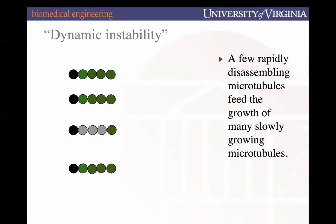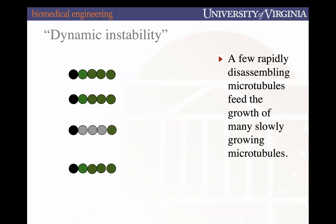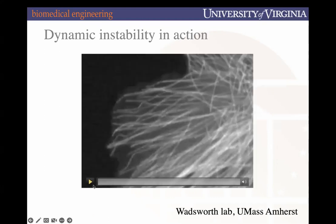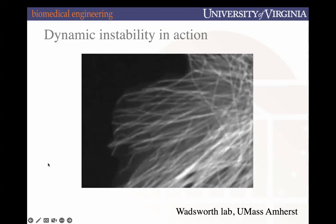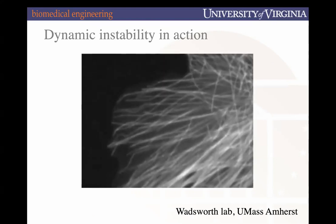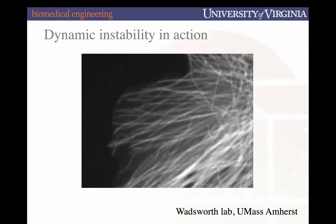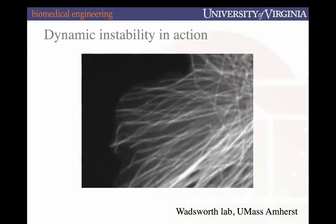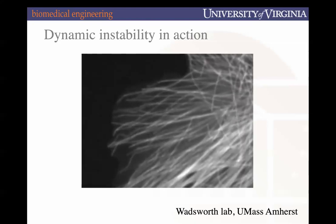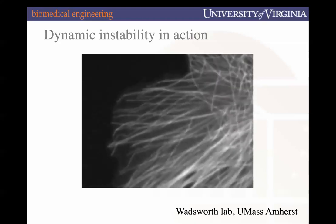We call this dynamic instability — some filaments grow and some shrink in this dynamic dance. As one grows and then the GTP cap goes away, it undergoes catastrophe and shrinks. Those tubulin monomers lose GDP, bind to a new GTP molecule, and then promote the polymerization of a different tubulin filament. It's a consistent cyclical process of growth, catastrophe, recycling, and regrowth.